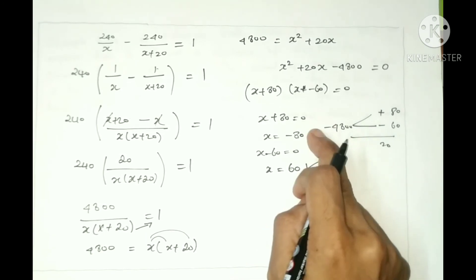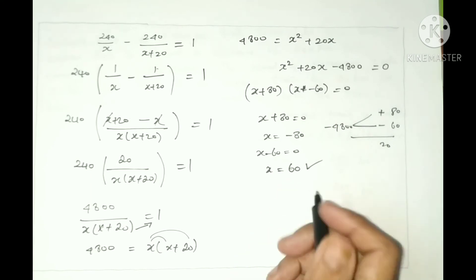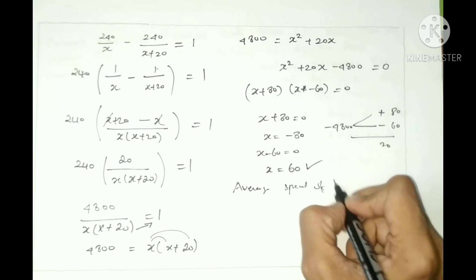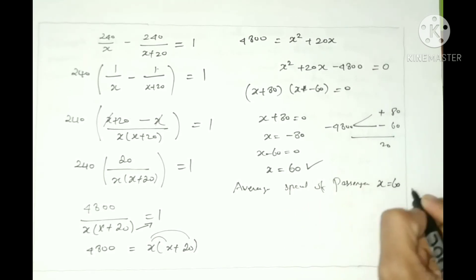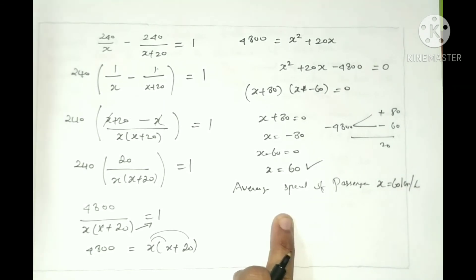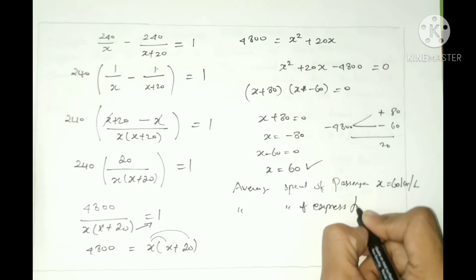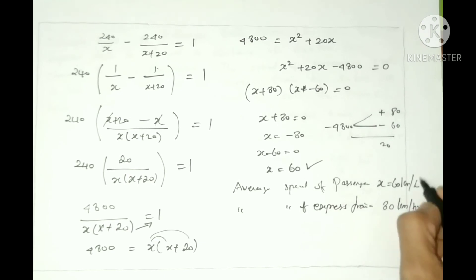Since negative values are not valid for speed, we reject x equals minus 80. So the average speed of the passenger train is x equals 60 km per hour. The express train speed is x plus 20 equals 80 km per hour.